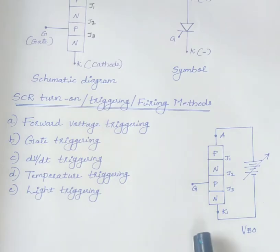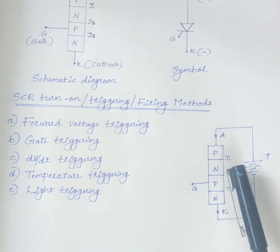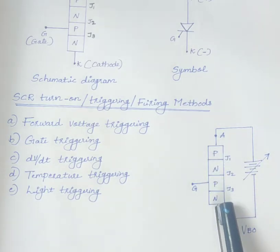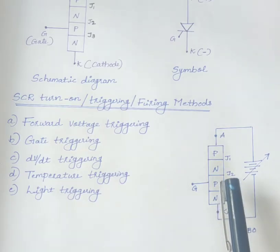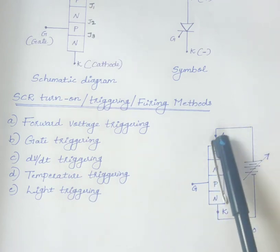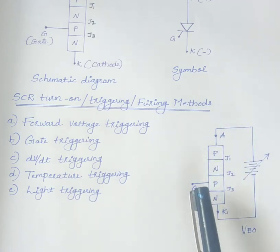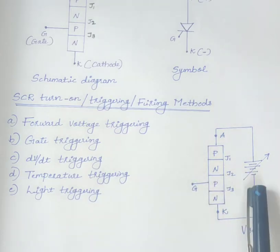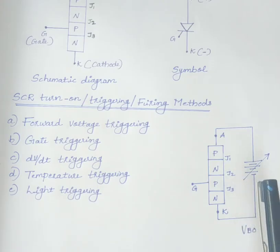As the junctions J1 and J3 are already forward biased, breakdown of the junction J2 allows the free movement of carriers across three junctions. As a result, large forward anode current flows. Therefore, thyristor changes from off-state to on-state. This is the forward voltage triggering.